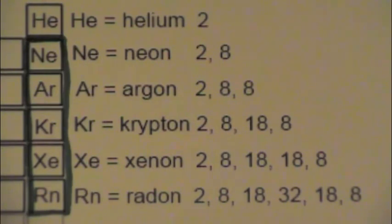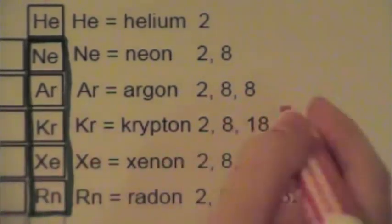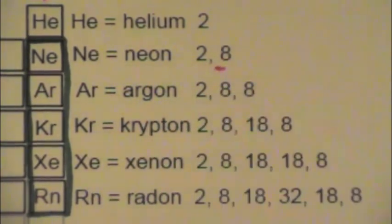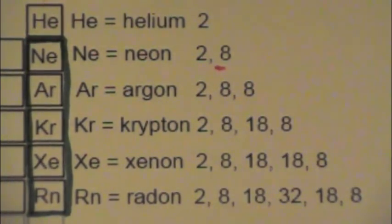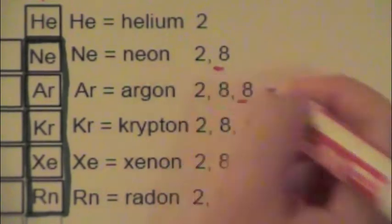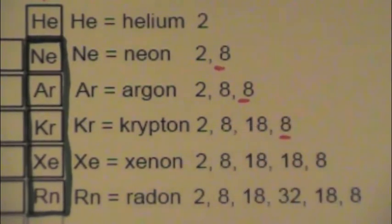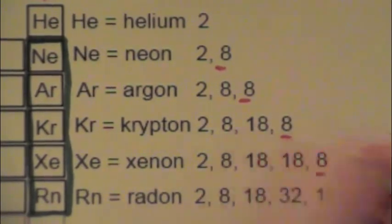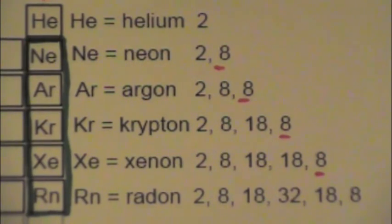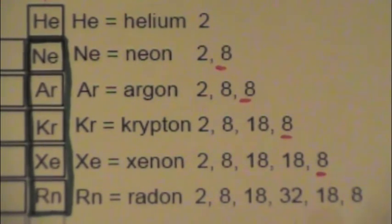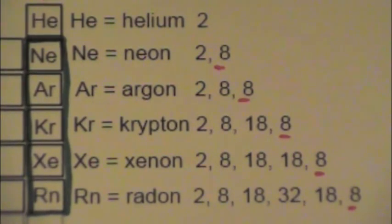you can see that it has eight valence electrons. Argon has eight valence electrons. Krypton also has eight valence electrons. Xenon has eight valence electrons. And radon also has eight valence electrons.